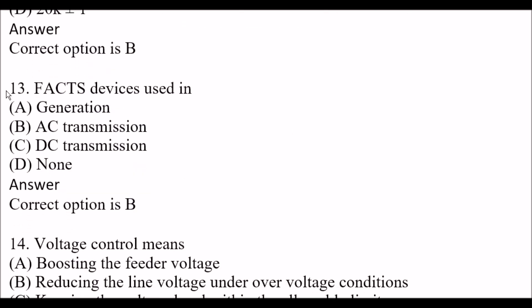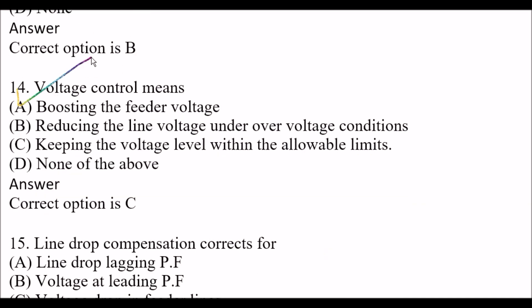Next question: FACTS devices are used in — Option A: Generation. Option B: AC Transmission. Option C: DC Transmission. Option D: None. The right answer is Option B, AC Transmission. FACTS devices are used in AC transmission. Next question: Voltage control means — Option C: Keeping the voltage level within the allowable limits — is the right answer. Voltage control means keeping the voltage level within allowable limits.